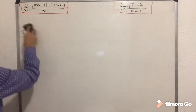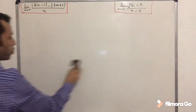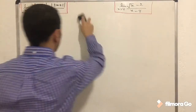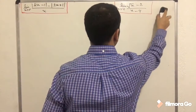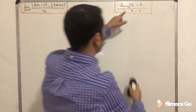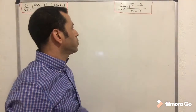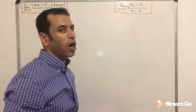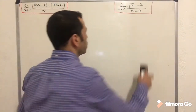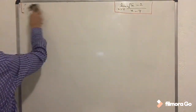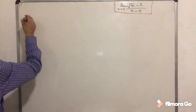We chose the first example because of absolute value. Now we are choosing the second example because of the conjugate — we need to work with a square root. The goal is to show you how and when to use the conjugate.